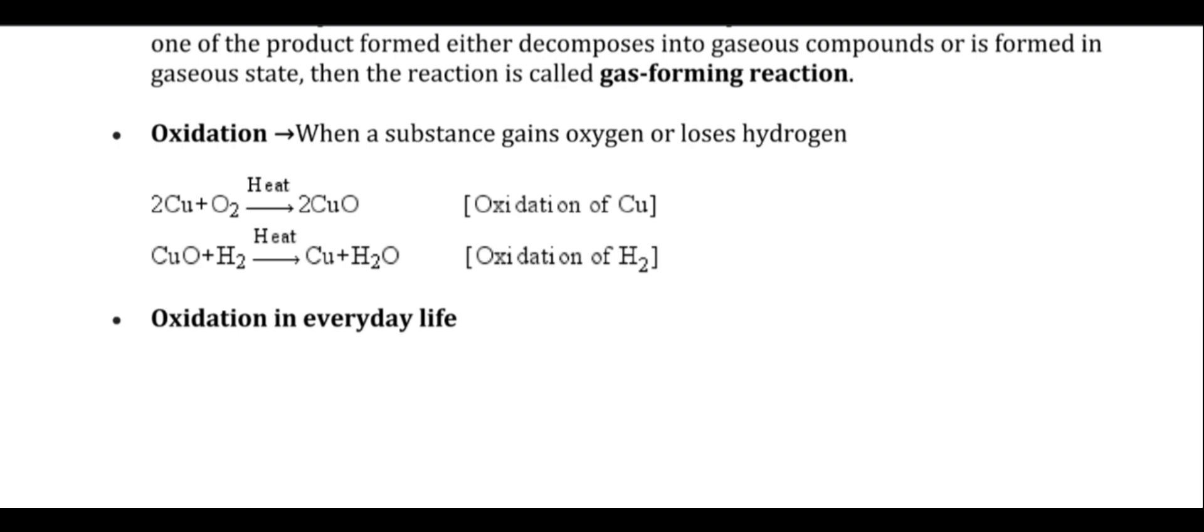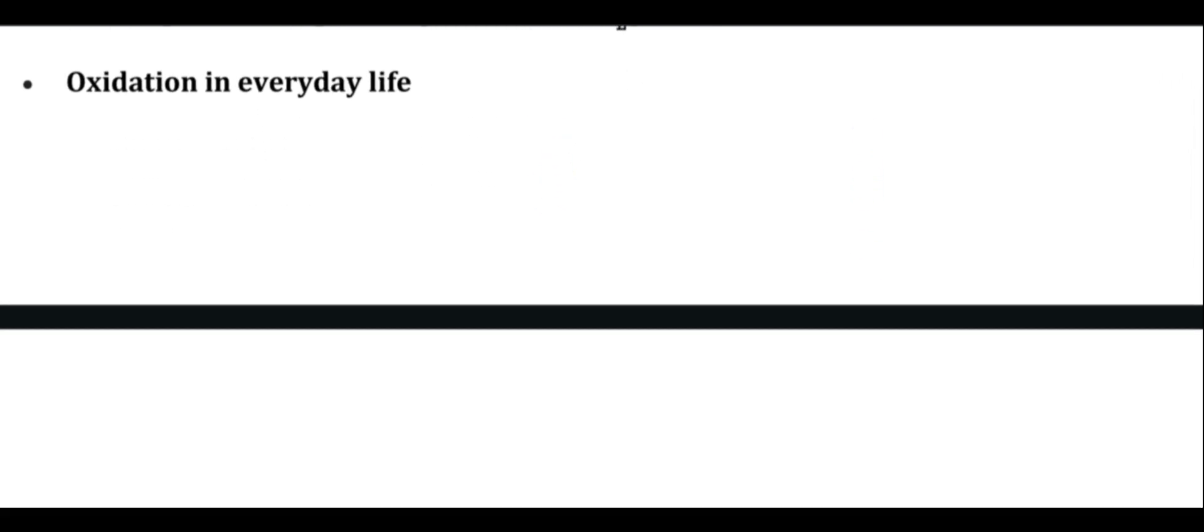Oxidation reactions occur in two cases. Oxidation happens when oxygen is added or hydrogen is reduced. In two cases we can talk about oxidation and reduction. For example, copper plus oxygen gives copper oxide. When copper gains oxygen, oxidation occurs.